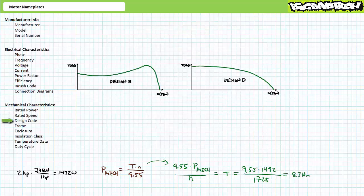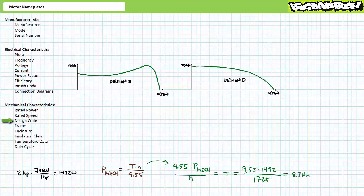The design or design code entry specifies the shape of the motor's speed-torque curve. Design B is the most common. Design D motors are designed to lift loads with large static inertia — a Design D motor can move a static load at almost three times its rated torque, making it suitable for low-speed, high-torque applications like cranes or hoists. We'll examine differences between Design B and Design D in greater detail in later lectures.